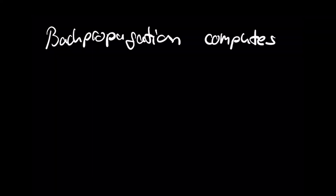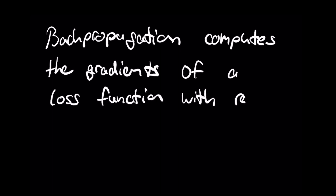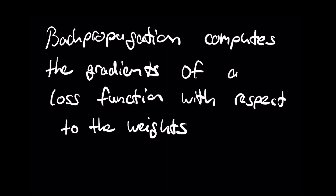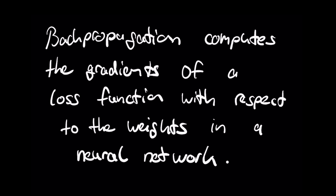Backpropagation computes the gradients of a loss function with respect to the weights in a neural network. This gradient is then used to update the weights in the training step, for example with an optimization algorithm like gradient descent. A quick side note: I'm going to use the term gradient in this video all the time, and by gradient I also mean derivative.